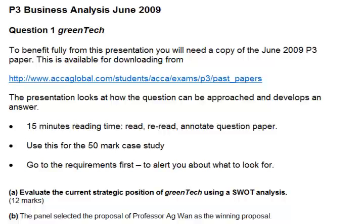It's worth looking at the Part B requirement. The panel selected the proposal of Professor Aguan as a winning proposal, and we are to write a briefing paper evaluating the 3 proposals and justifying the selection of the proposal of Professor Aguan as the best strategic option for Green Tech to pursue. We'll keep that at the back of our mind, as something of what we say in Part B is likely to be the result of what we find in Part A.